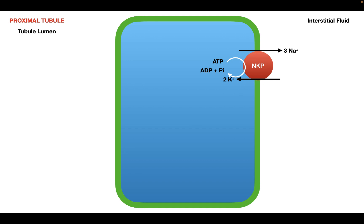On the apical membrane, we have the sodium-hydrogen exchanger. This exchanger uses the electrochemical gradient established by the sodium-potassium pump to pump hydrogen ions up against their gradient. The sodium-hydrogen exchanger moves sodium into the cell down its electrochemical gradient, releasing energy, which is then used to bring hydronium ions into the tubule lumen against their gradient.